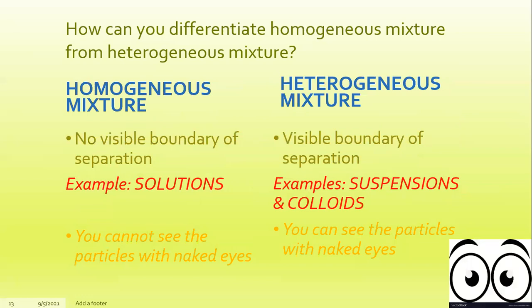How can you differentiate a homogeneous mixture from a heterogeneous mixture? For homogeneous mixture, there is no visible boundary of separation — examples are solutions, and you cannot see the particles of the materials combined with the naked eye. However, in a heterogeneous mixture, there is a visible boundary of separation between and among the components. Examples are suspensions and colloids, and you can see the particles with the naked eye.